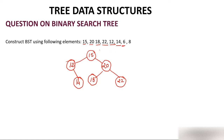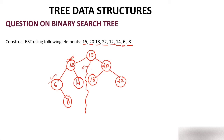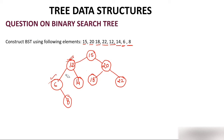The next element is 6. Compare 6 with 15 - smaller. Compare with 12 - smaller, so 6 becomes the left child of 12. Then the last element is 8. Compare with 15 - smaller. Compare with 12 - smaller. Compare with 6 - greater, so 8 comes to the right of 6. Now verify the property: every left child of 15 is less than 15 and every right child is greater. For node 20, left child is less than 20 and right child is greater. For node 12, left child is less than 12 and right child is greater. This property is followed everywhere. This is the required binary search tree.